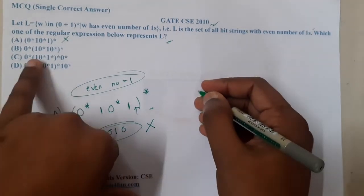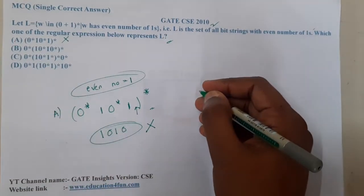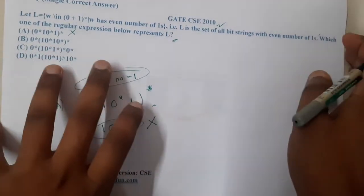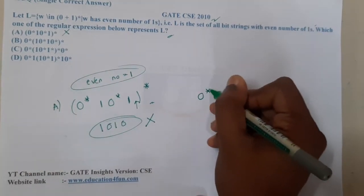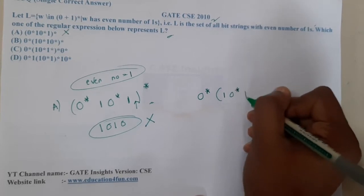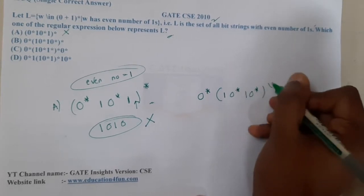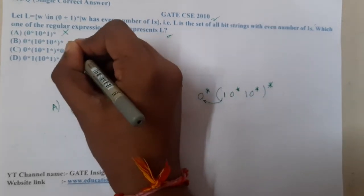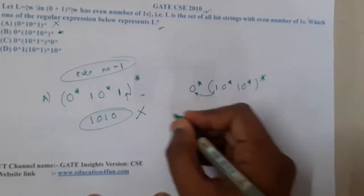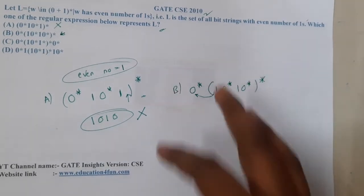Moving on to the next option B. In B, if you observe, he played a bit smart. Here he first started with 0* followed by (10*10*)*, so indirectly instead of writing inside he wrote outside. I think there is no issue here, so let us cross-check other options and later if something else is also correct then let us check B.